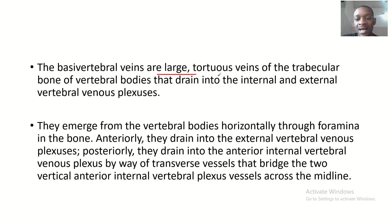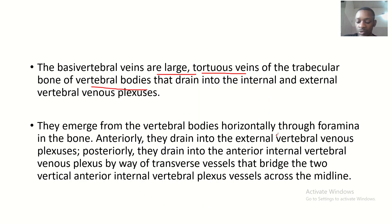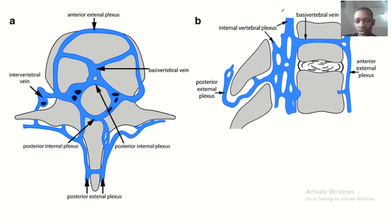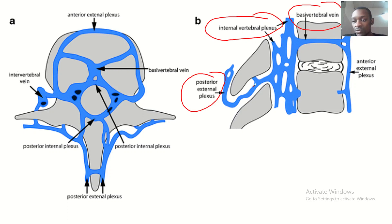The vertebral venous plexus are large tortuous veins of the trabecular bones of the vertebral bodies, and they drain into the internal and the external vertebral venous plexus. The internal venous plexus receives drainage from the vertebral veins. From there, they drain into the external venous plexus — either the anterior external plexus at the front, or the posterior external plexus at the back.